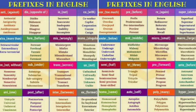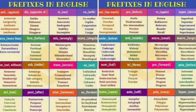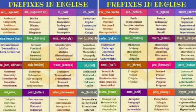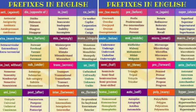Hello dear students. In the last class we have seen degrees of adjectives — positive degree, comparative degree, and superlative degree. Today let us look at formation of adjectives. Adjectives can be formed by adding a prefix or suffix to another word, or by joining two or more words together to make a compound adjective.